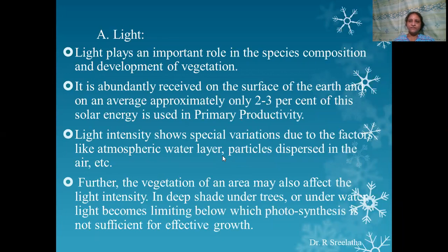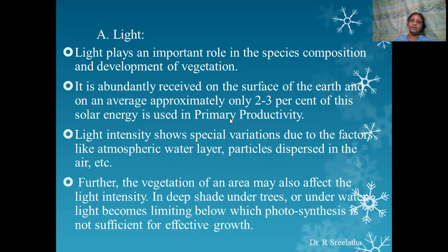Let us deal with the first climatic factor: light. Light plays an important role in the species composition and development of vegetation. It is abundantly received on the surface of the earth, and on average approximately only two to three percent of this incident solar light or solar energy is used in primary productivity.